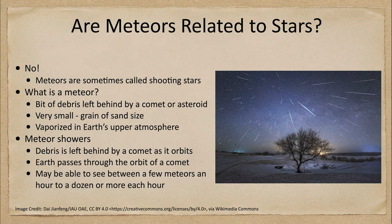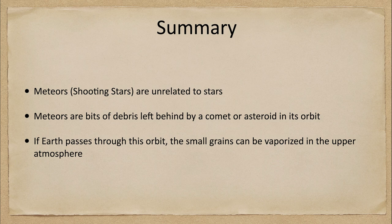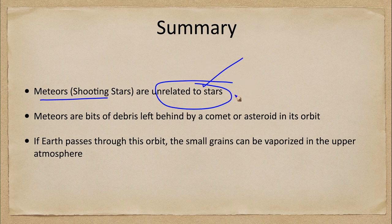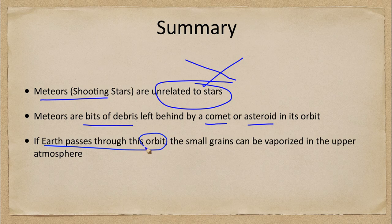So in reality, meteors have nothing to do with stars but do have to do with comets within our own solar system. To summarize: meteors, or shooting stars, have absolutely nothing to do with stars at all. Meteors are bits of debris left behind by a comet or an asteroid in its orbit, and if the earth passes through this orbit, these small grains can be vaporized in earth's upper atmosphere, leaving the trails we see behind.